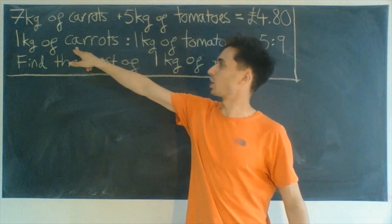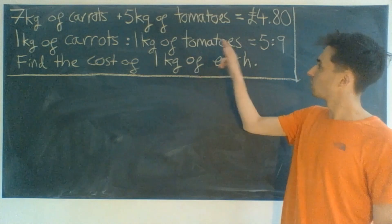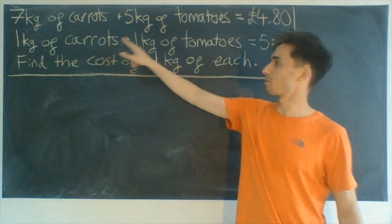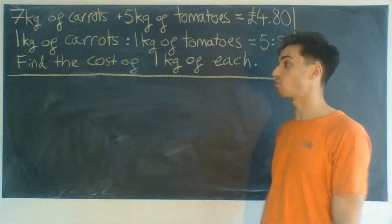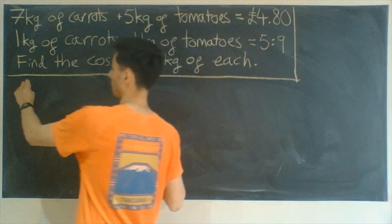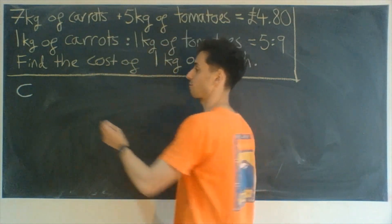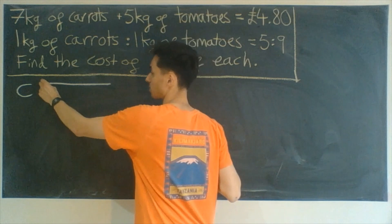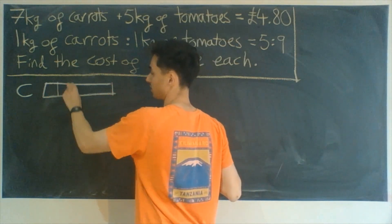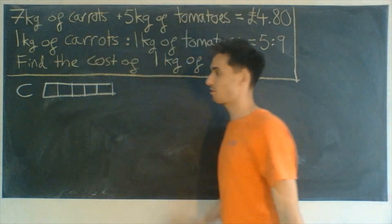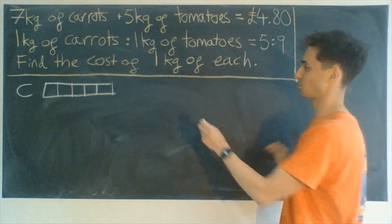The reason we're going to go for ratio first is because it's a really nice visual way to see what's going on. So first of all, 1 kilogram of carrots to 1 kilogram of tomatoes is 5 to 9. Let's draw a picture of this ratio. Carrots are over here — this is our 5 — so I'm going to draw 5 boxes in a bar model. For our tomatoes we need to draw 9.